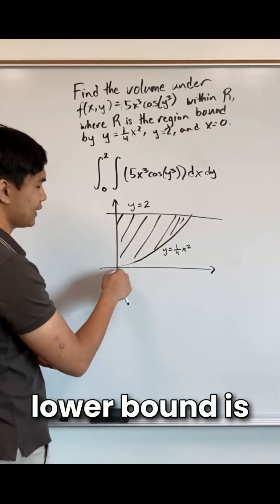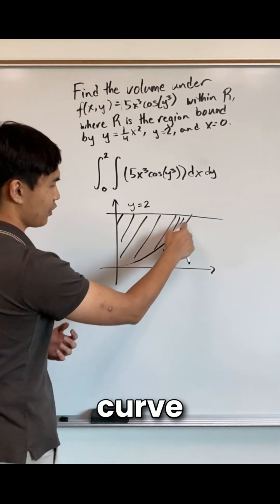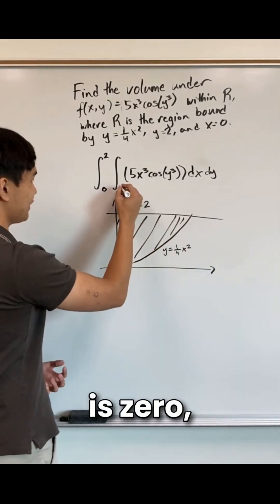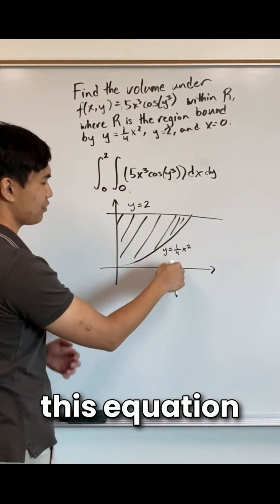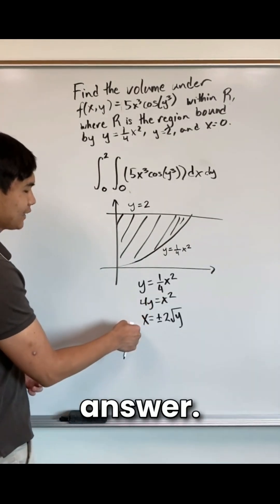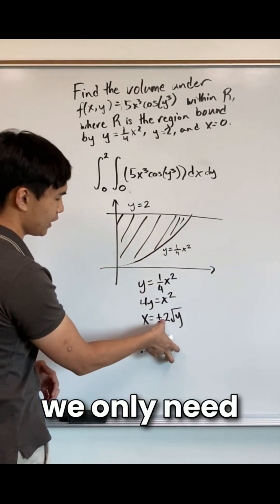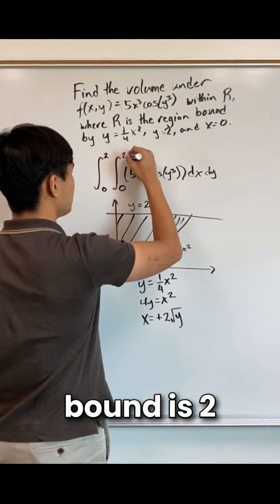But with our x bounds, our lower bound is 0, and our upper bound is actually this curve right here. So our lower bound for x is 0, and now we have to solve this equation for x to get our upper bound. Some simple algebra gets us this answer, and since it's the right side, we only need the plus. So our upper bound is 2 square root of y.